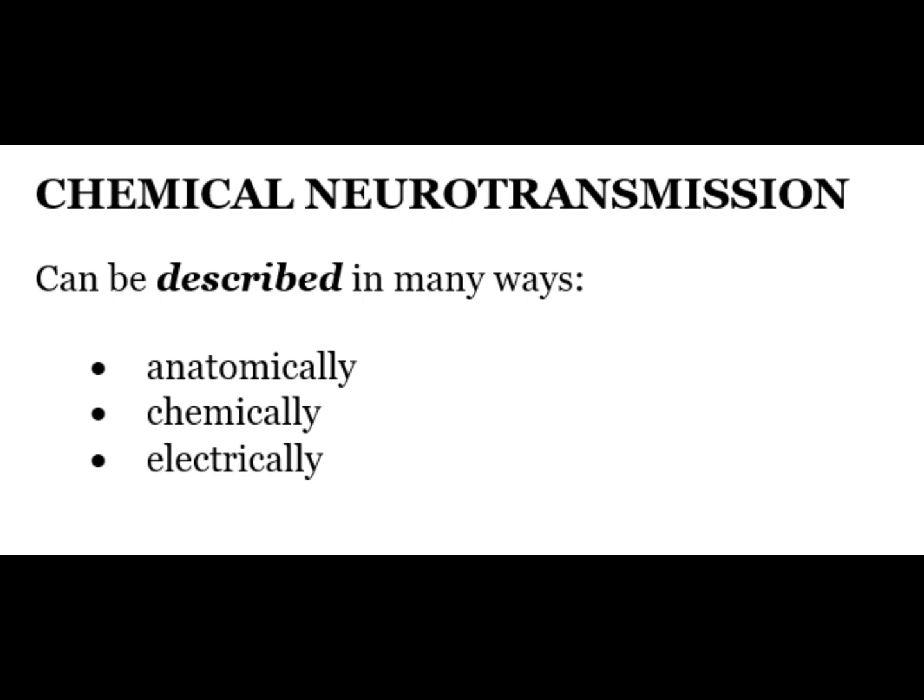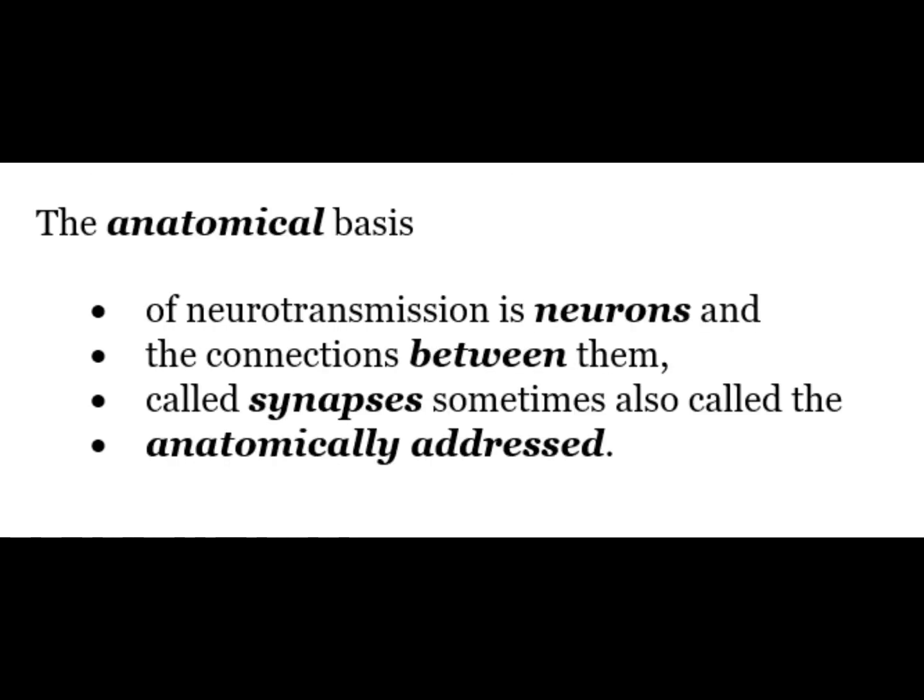Chemical neurotransmission can be described in many ways such as anatomical, chemical or electrical. The anatomical basis of neurotransmission is the neurons and the connection between them called synapses, sometimes also called the anatomically addressed nervous system.